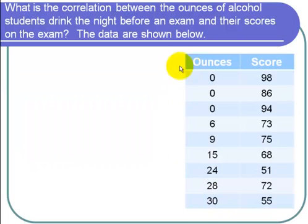Here's the data. We have ounces of alcohol and we have the score on the exam. For example, this person didn't drink any alcohol the night before the exam and scored 98%. I want to find the correlation between the ounces of alcohol and the exam score.